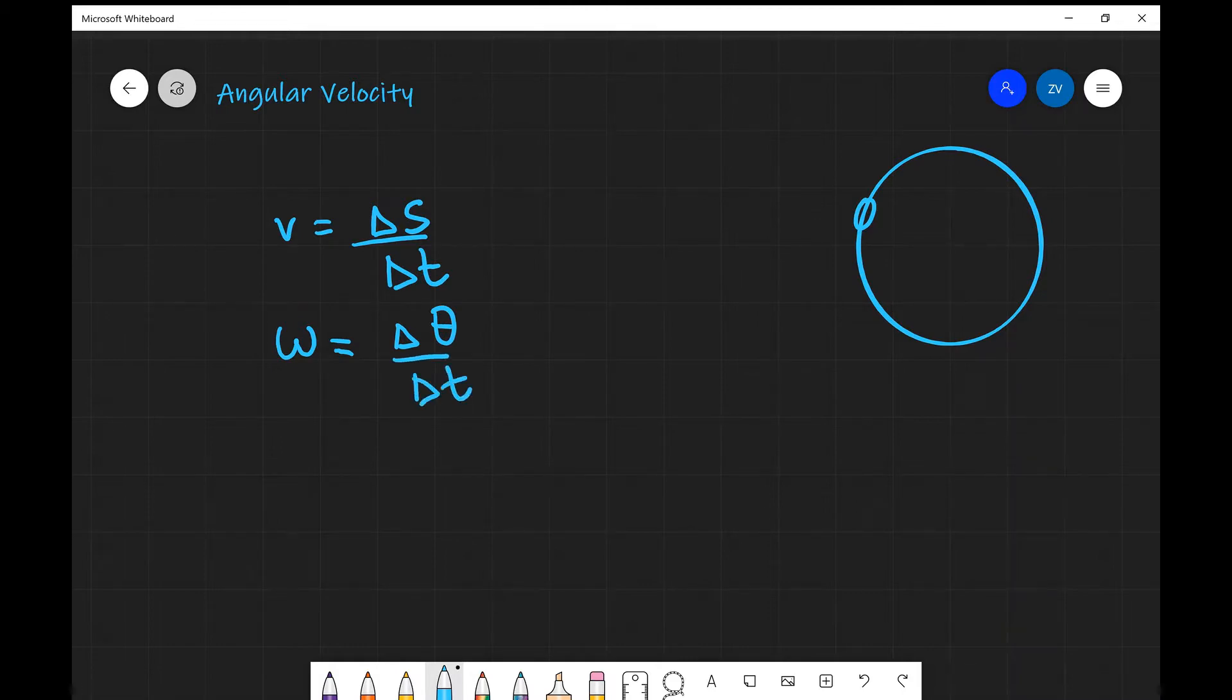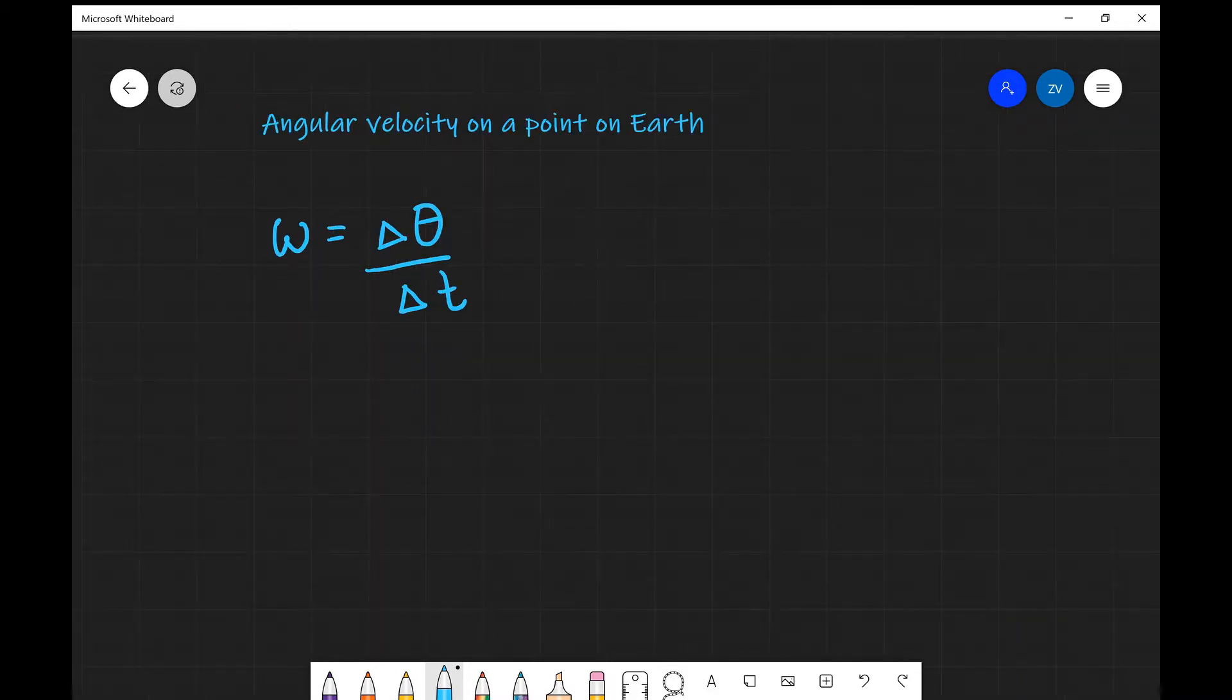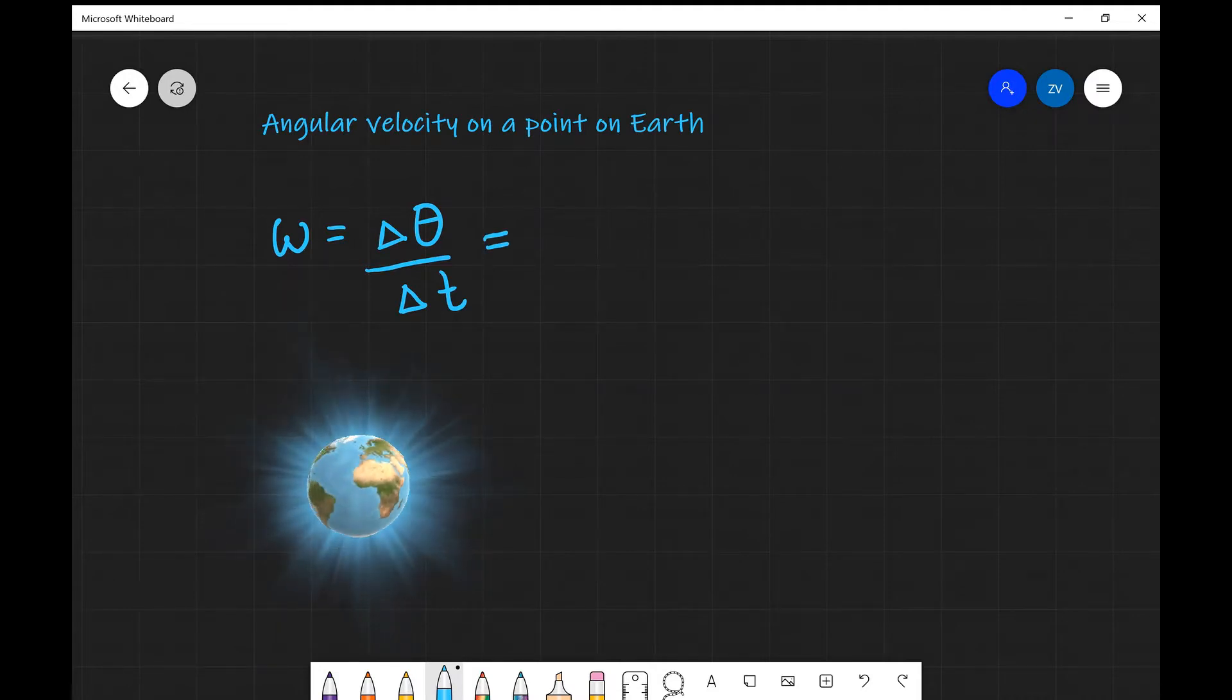In other words the angular velocity is a measure of how quickly, how big of an angular displacement you're moving along a circular trajectory. Let's imagine the earth spinning. What will the angular velocity be for a point on the surface of the earth?